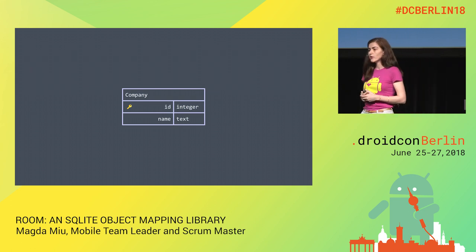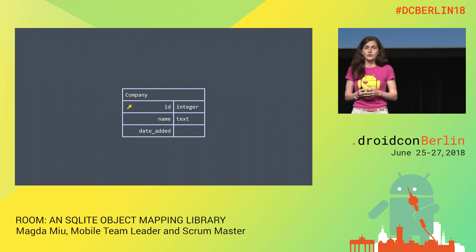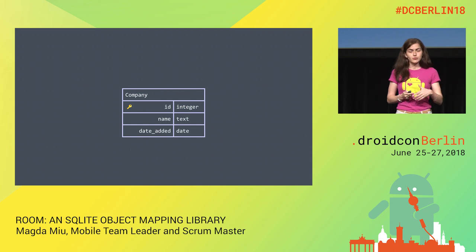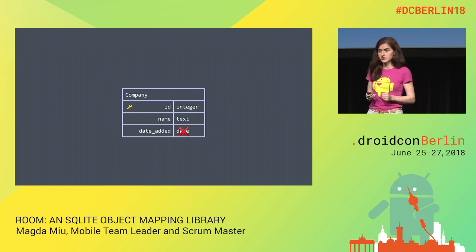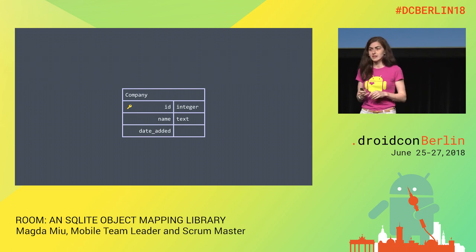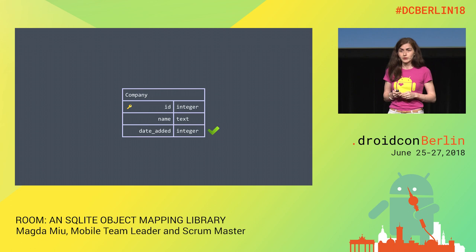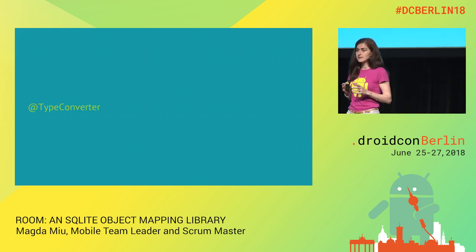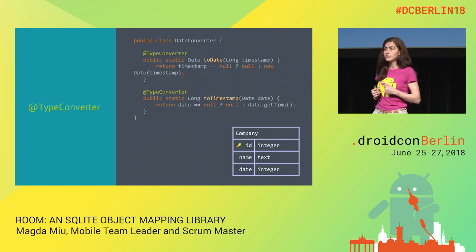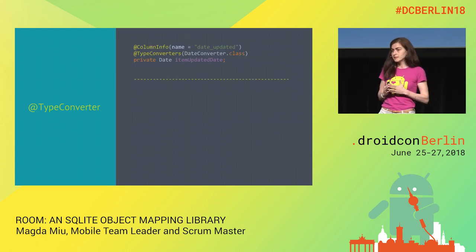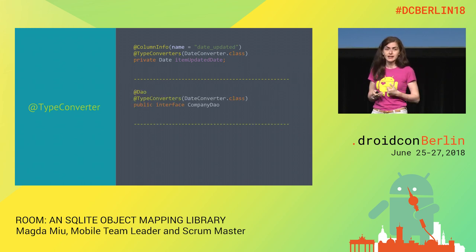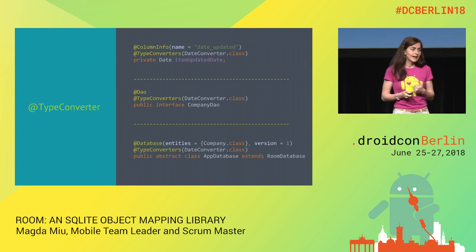Let's say we want to add a date when the company was inserted. This field is a Date type, but SQLite doesn't support the Date type. The best approach is to use an integer type instead, translating the date to a timestamp. Room offers a TypeConverter — we define two methods: one translating a timestamp to a Date and another translating a Date to a timestamp. This TypeConverter can be applied to a field, an entire DAO or entity class, or at the entire database level.